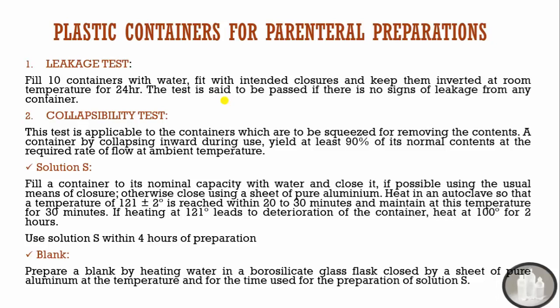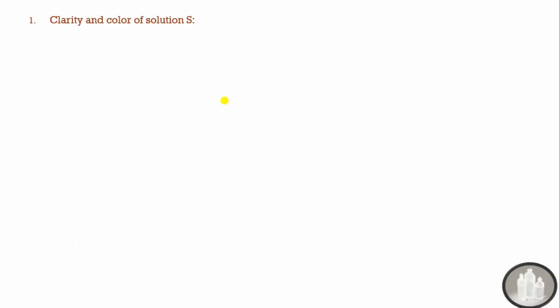Solution S is the test solution prepared by filling the container to its nominal capacity, closing it, and autoclaving at 121°C for 30 minutes (with 20–30 minutes required to reach temperature). If the container deteriorates at 121°C, autoclaving at 100°C for two hours is used. The solution must be used within four hours of preparation. The blank is prepared in a borosilicate flask by exposing water to the same conditions as Solution S.